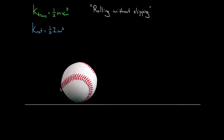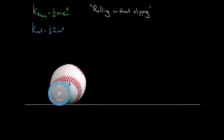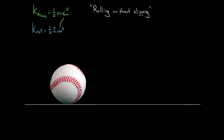Why is this a big deal? This implies that the two kinetic energies are proportional to each other, and moreover, it implies that the center of mass velocity and the angular velocity are also proportional. So how do we prove that the center of mass velocity is proportional to the angular velocity?